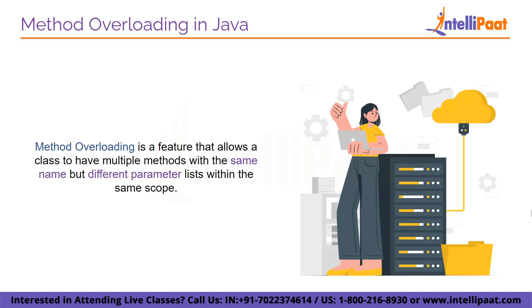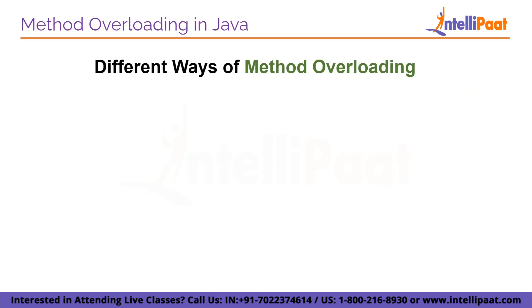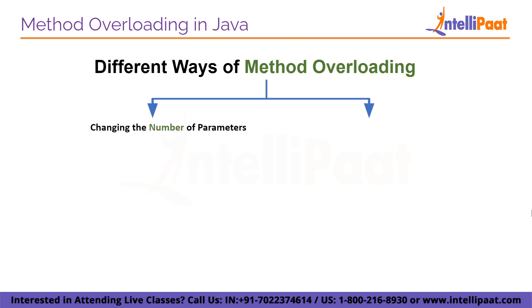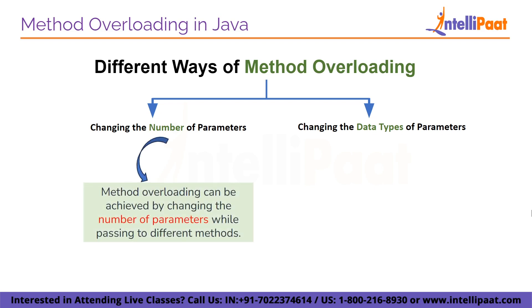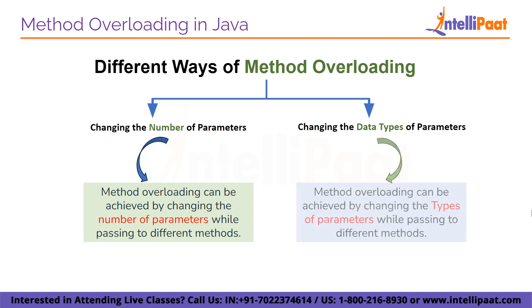Let me tell you the different ways of method overloading in Java. The first one is changing the number of parameters, and the second one is changing the data types of parameters. Changing the number of parameters can be achieved by just changing the number of arguments passed to different methods. Changing the data types of parameters can be achieved by changing the types of arguments passed to different methods.